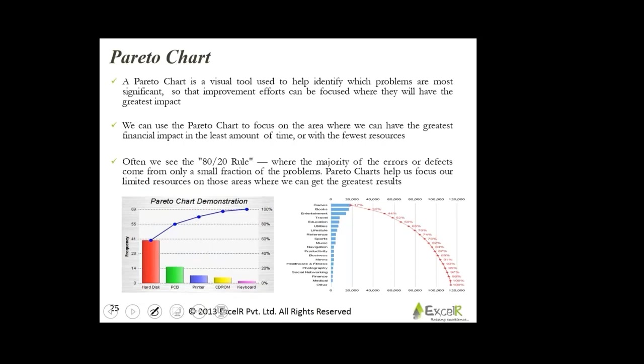You can represent it in either way — doesn't matter. The Pareto chart focuses on the area where we can have the greatest financial impact in the least amount of time or with the fewest resources. Spend less time, spend fewer resources, and get maximum benefits. That's when you would use a Pareto chart.